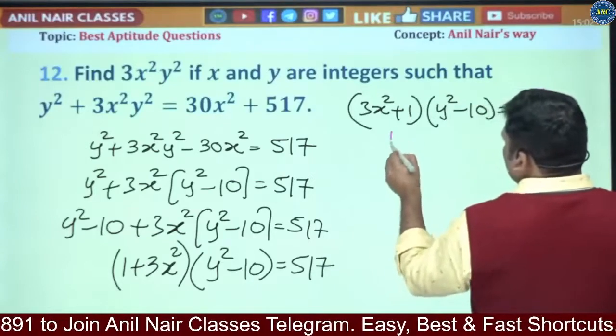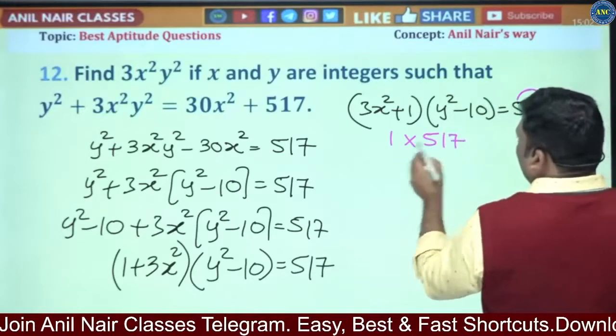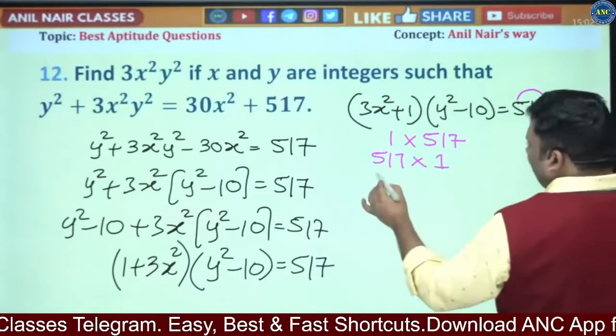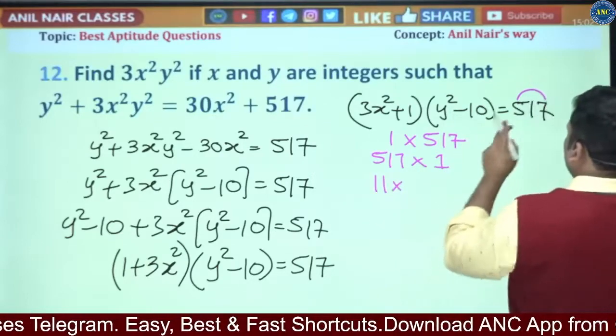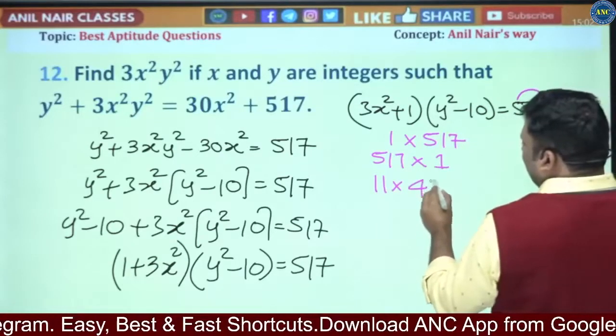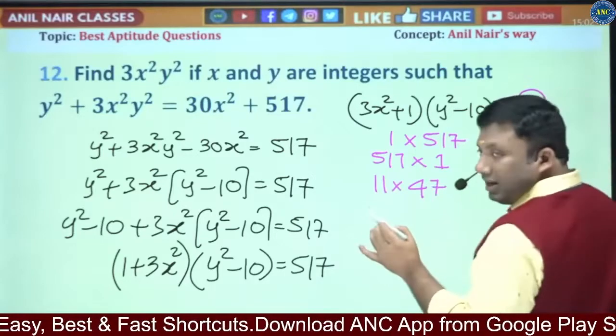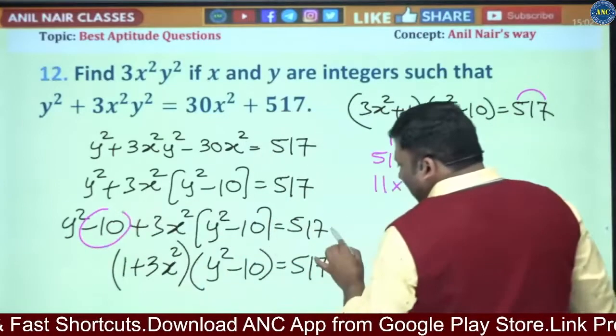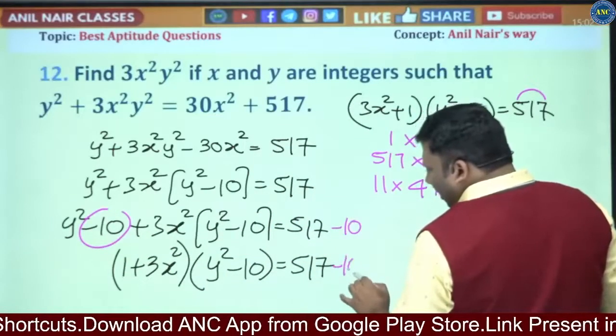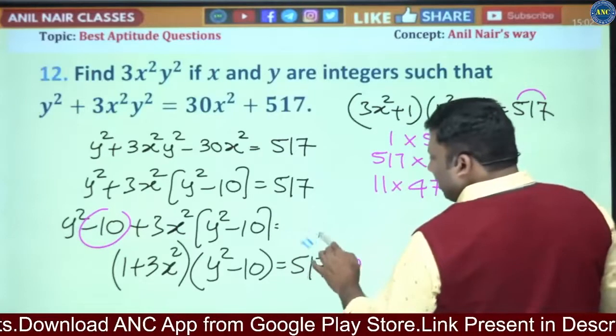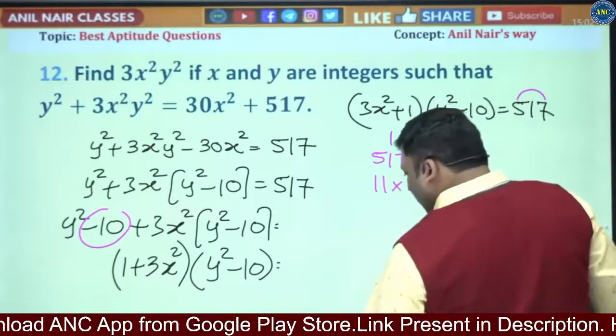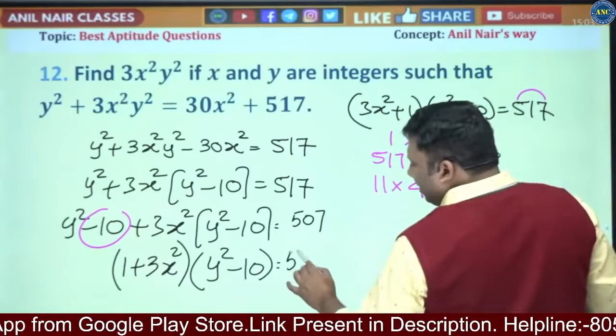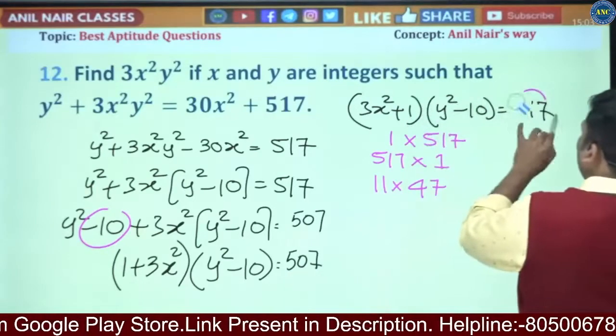See the mistake which we did here. We subtracted by 10 on the left hand side but did not subtract by 10 on the right hand side. Don't do these calculation mistakes. This will become 517 - 10, which is 507. Don't do these calculation mistakes. The entire answer will go for a toss. Left hand side we subtracted 10, right hand side we should also subtract.